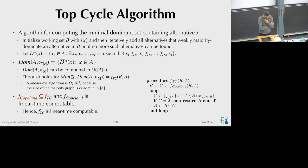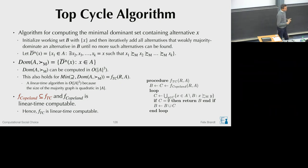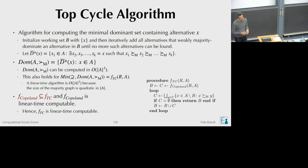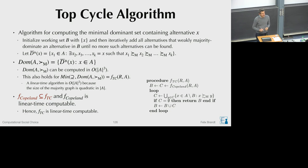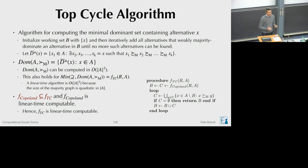Regarding the top cycle: we saw that we can efficiently compute it by first realizing we can compute the minimal dominant set containing a given alternative. Our first naive algorithm worked by guessing a starting alternative, computing the smallest dominant set that contains it, by repeatedly adding alternatives that weakly dominate everything in the current working set. We realized that the set of Copeland winners is always contained in the top cycle, so we can speed up by taking a Copeland winner as the starting point and then iteratively adding alternatives.